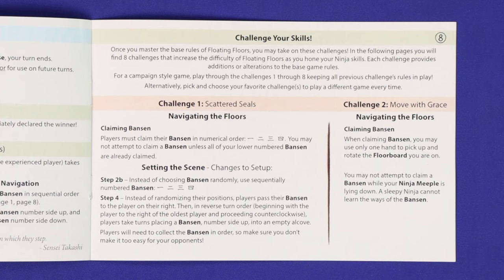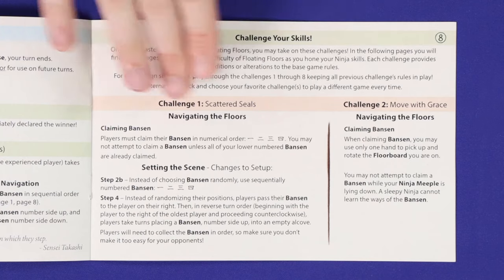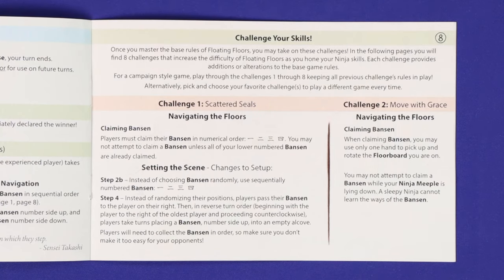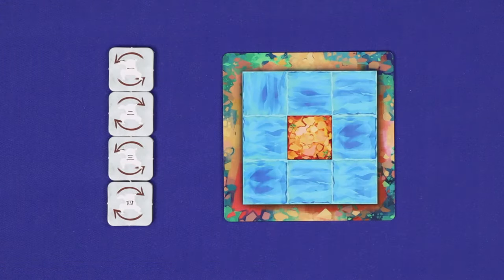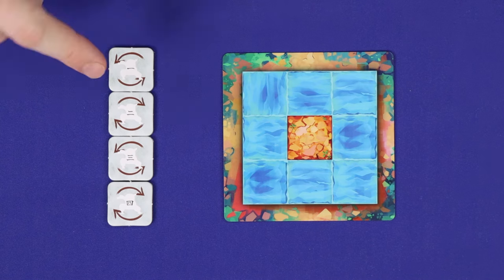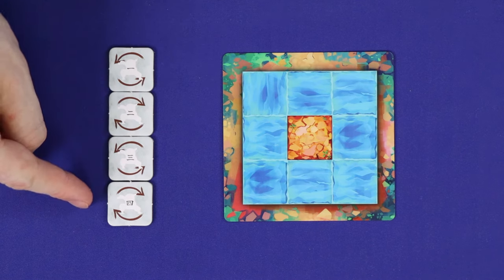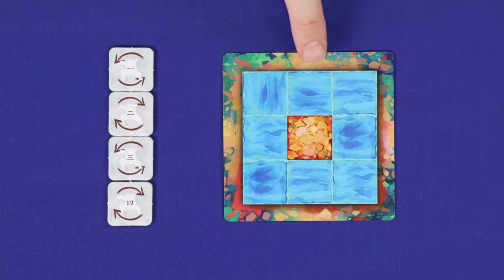Then once you've mastered the basic game, you can start to challenge your skills with eight different challenges introducing new rules and difficulties at the back of the rulebook. We won't cover all of these challenges in this video, but it will include a few of the features we've seen before, including the numbered sides of the Banson Seals, and the lakesides of the terrain cards.